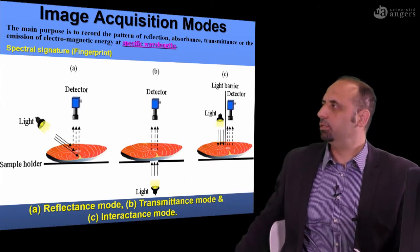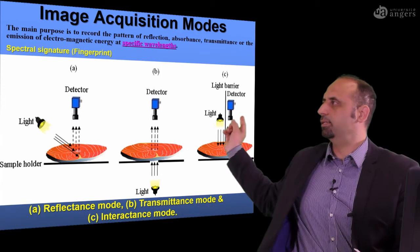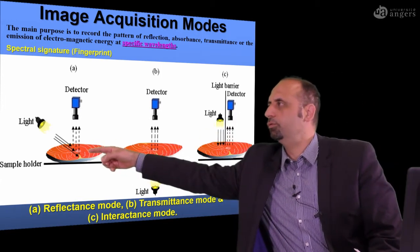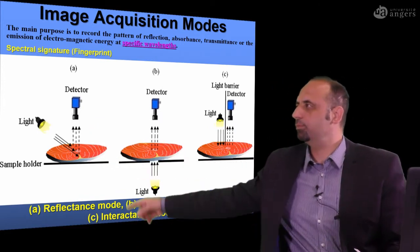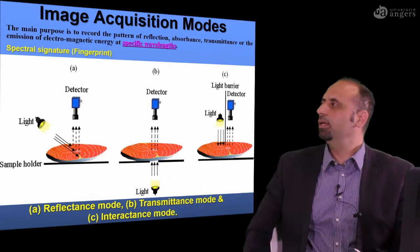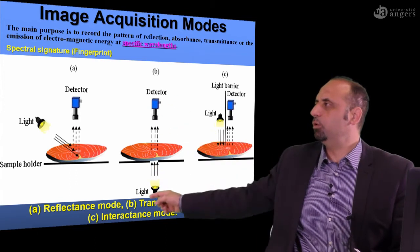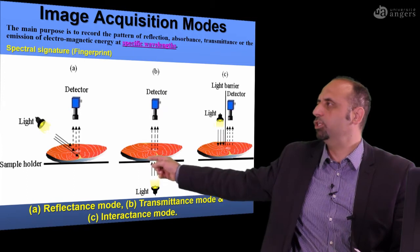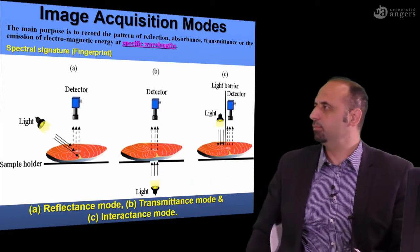Image acquisition mode refers to the relevant arrangement between the light and the detector. If the light and the detector are in the same direction, we call this arrangement reflectance mode. If the light and the detector are in two opposite directions — meaning the light is incident in one direction and received by the detector from the other — this mode is called transmittance mode.